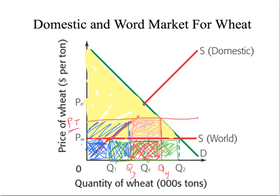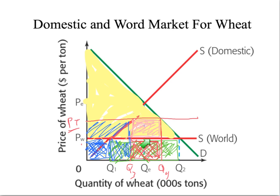The tariff has brought all of these U.S. producers back into the marketplace, resulting in an expansion of domestic revenue for wheat. This quantity of wheat from Q3 to Q4 is still being produced by foreign producers, but they're only getting PW because the tariff is being collected by the government. So foreign revenue is equal to this area here, and this area is equal to the government revenue.